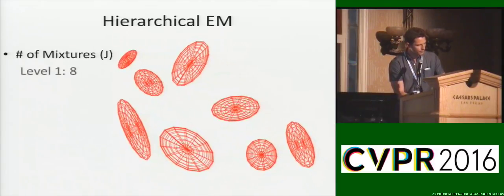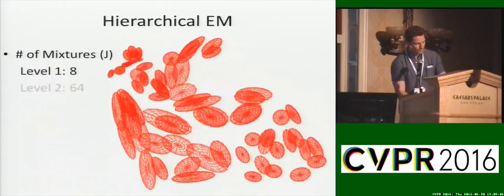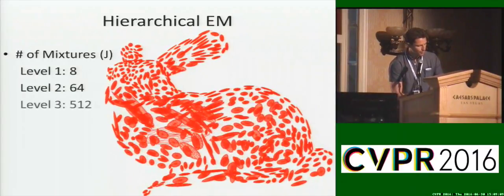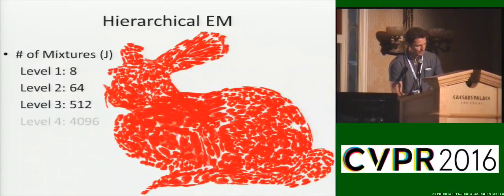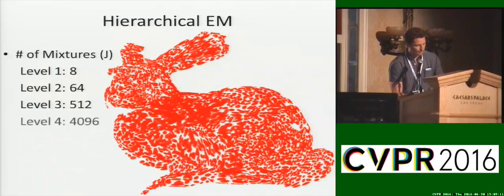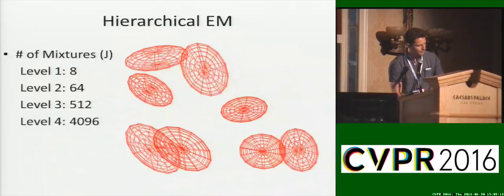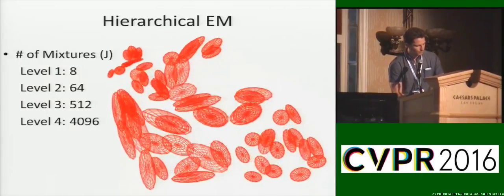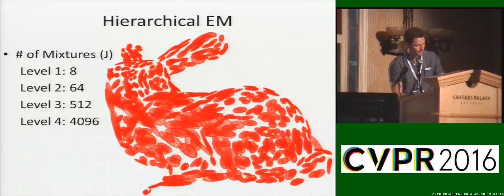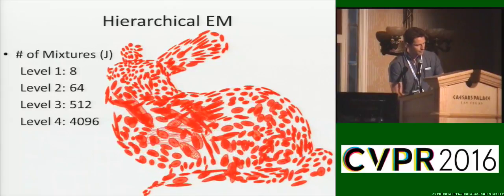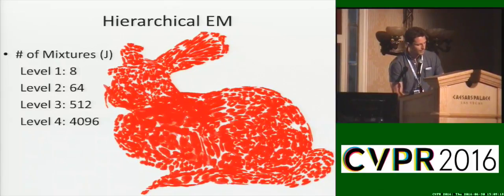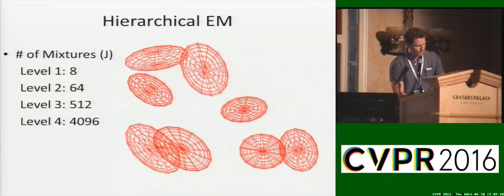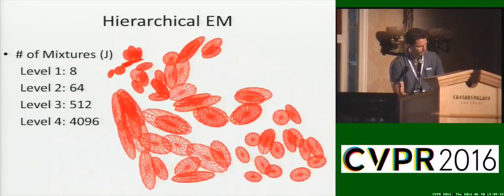To create the model, we first perform a coarse, compact segmentation into Gaussian mixtures using a point-parallel modification of the EM algorithm. We then recurse this process at each individual mixture, producing more coarse models at finer and finer spatial granularity, such that when combined together again, they produce a very high-fidelity global model.